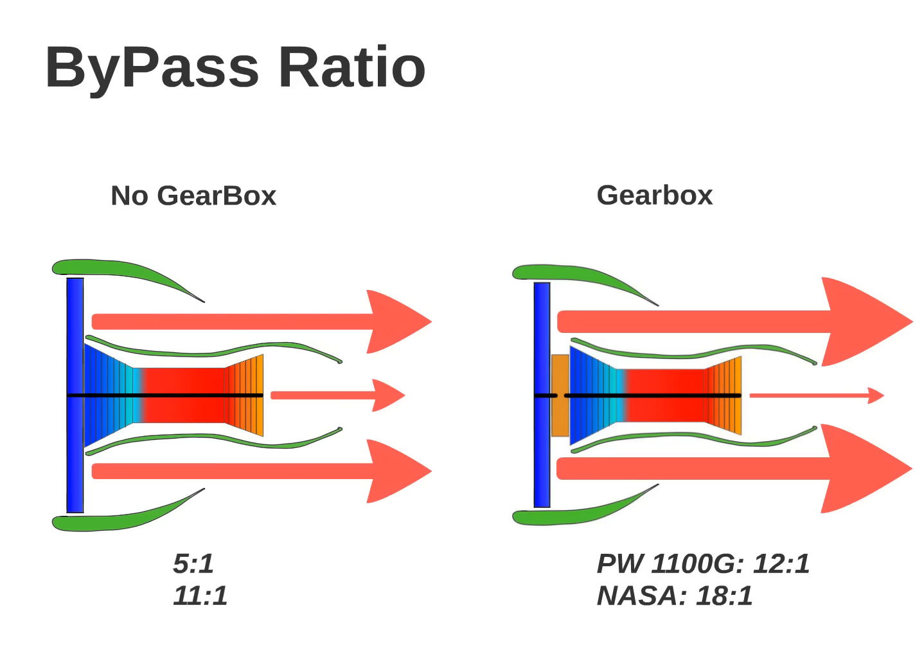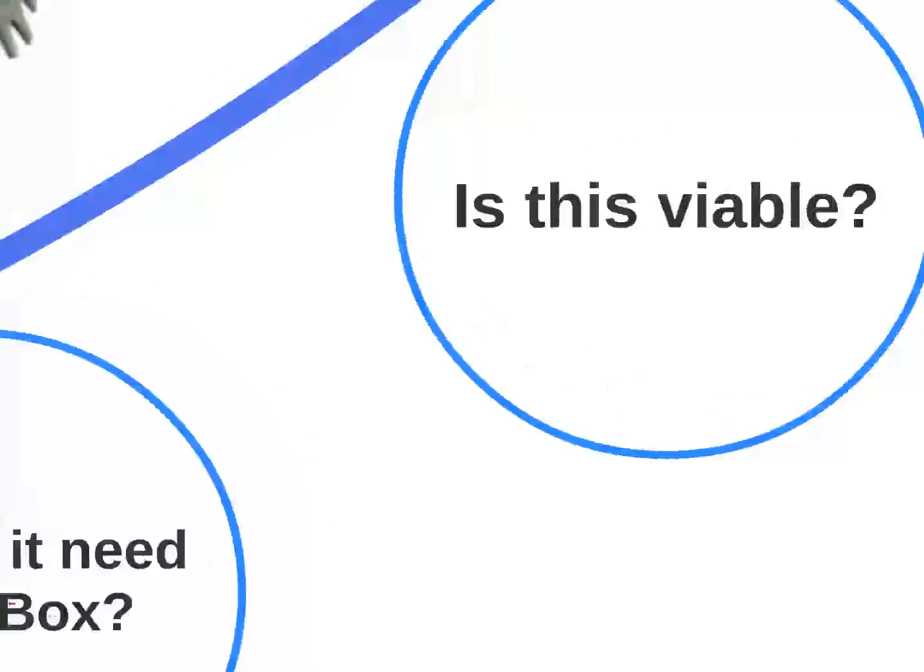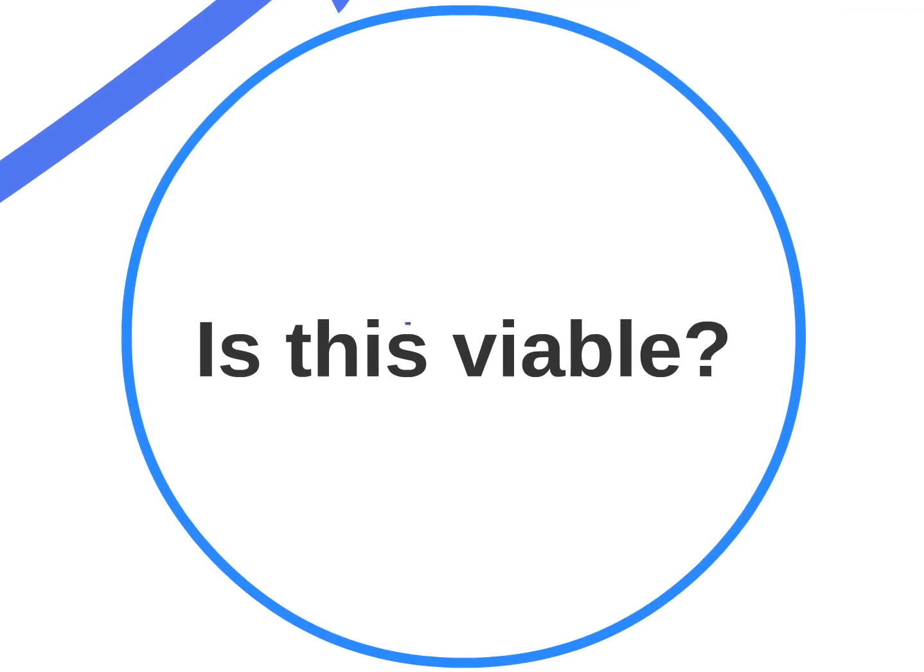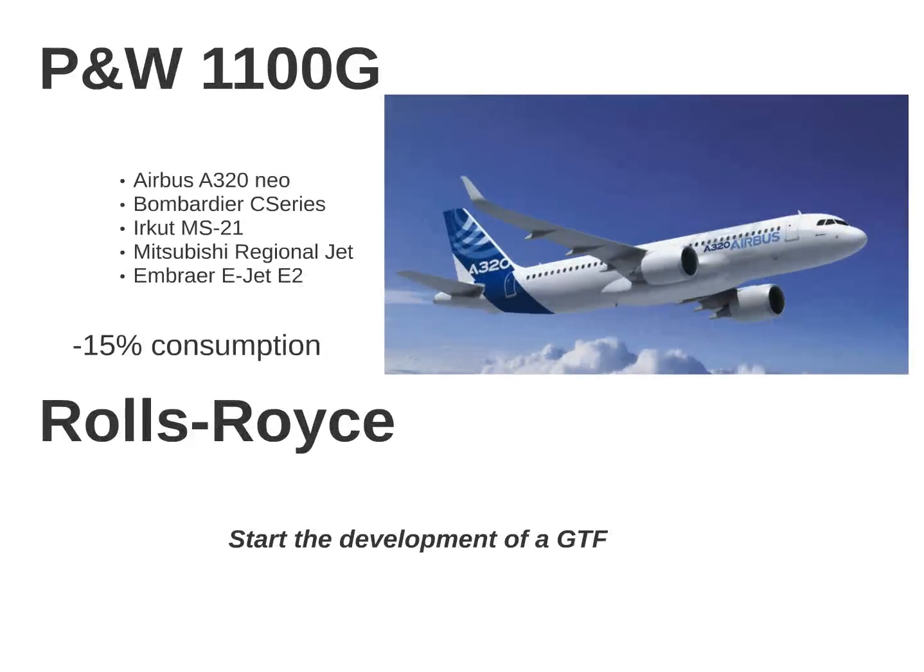This leads us to the last question: Is this viable? For now, there are very few gearbox engines, but Pratt & Whitney decided to propose an engine for the A320neo of Airbus. They claim a 15% reduction of the consumption for the engine compared to the equivalent engine. Rolls-Royce decided to start the development of a gearbox turbofan as well.